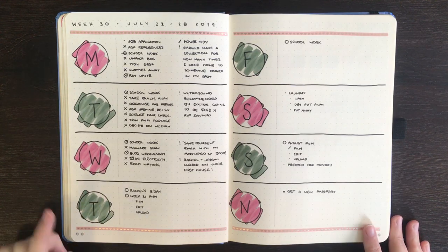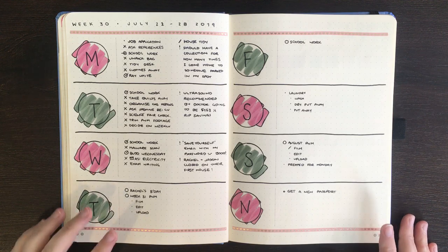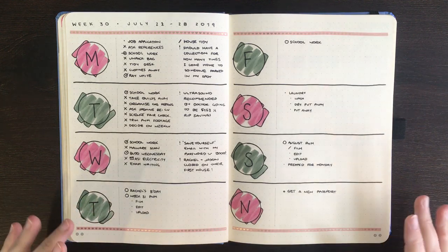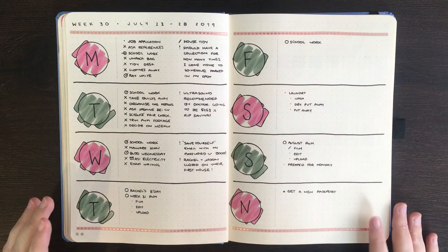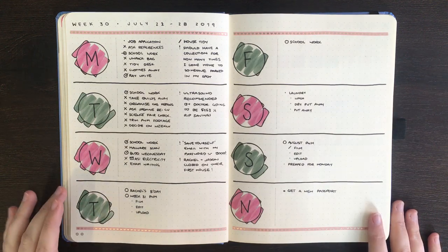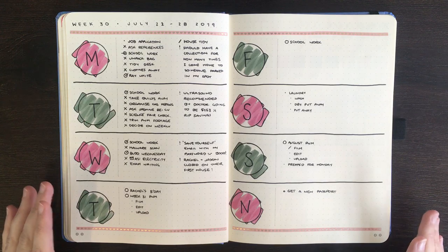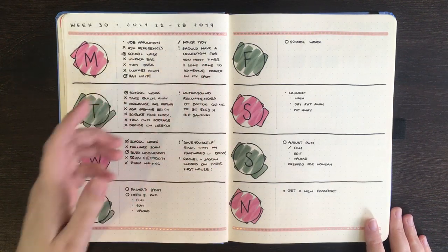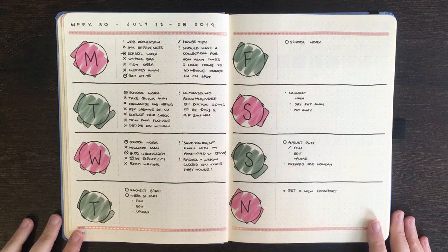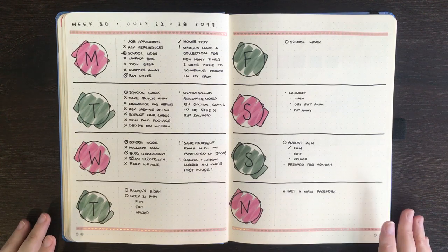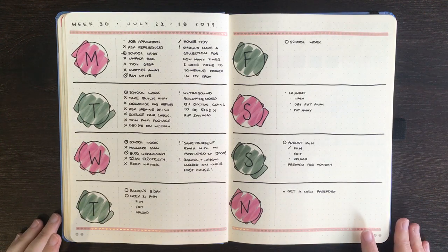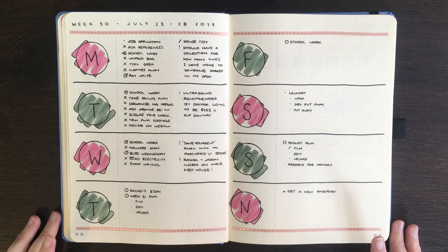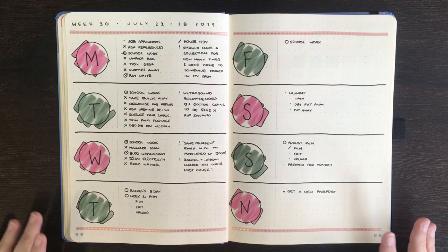On Monday I drove my partner to work, came home, and when I got home there were painters parked in my spot. I know that sounds dumb, but yeah, it's where we park our car. So I got down the bottom, had to ask them to move, big kerfuffle with that. Thus I wrote down this note: should have a collection for how many times I've come home to someone parked in my spot.